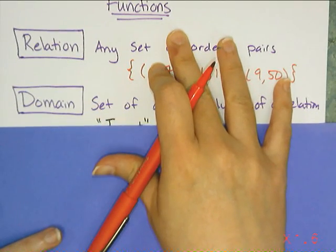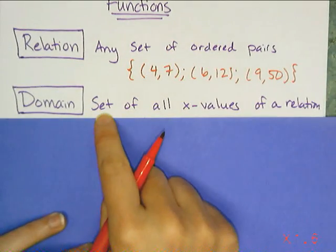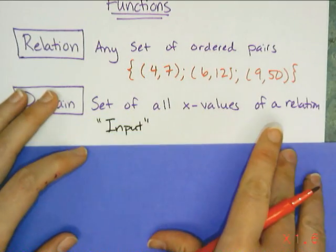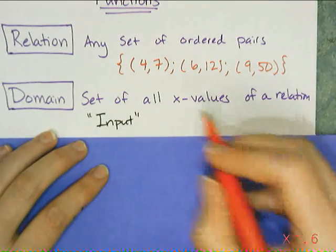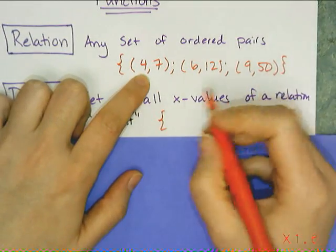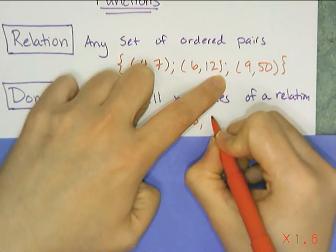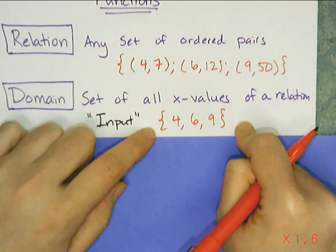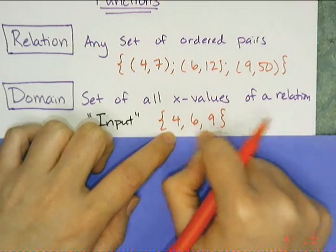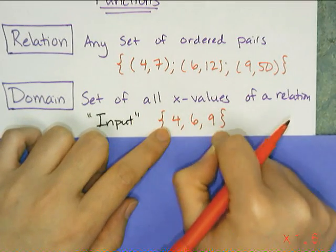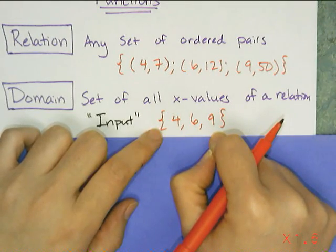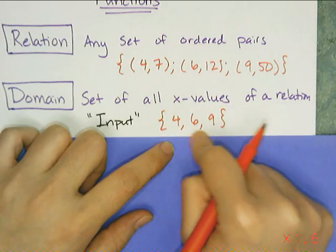Part of the relation is something called a domain. The domain is the set of all x values of a relation, and in the context of a function we refer to them as inputs. So I can write the domain of this relation by listing out all the x values in the ordered pairs: 4, 6, and 9. If I had a repeated x value I wouldn't list it twice — repeated numbers don't get repeated in the set. Sets are unordered by definition, but I'll put everything in order for ease of grading.